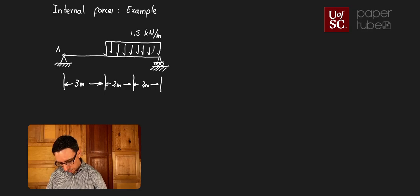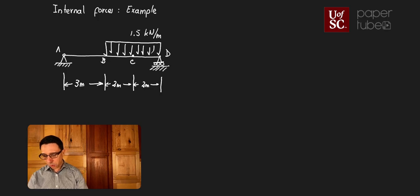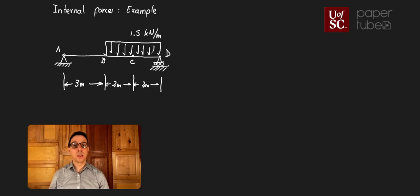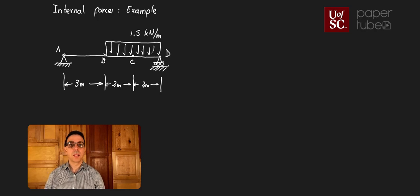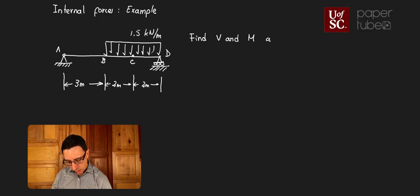We're going to call this point A, this point B, this point over here C, and this one D. What we need to do is calculate the shear and the bending moment at C. That's our goal — find V and M at C.